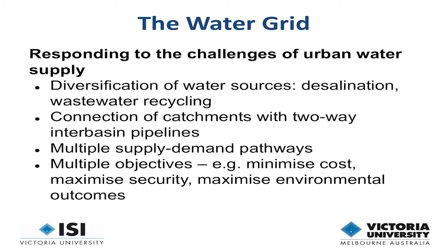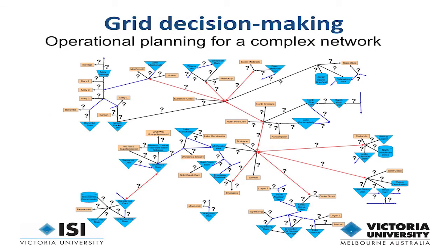This diagram shows some of what the model would look at — multiple sources of water, multiple demands, and so on. I'll come back to that later, so we can skip over it for now.